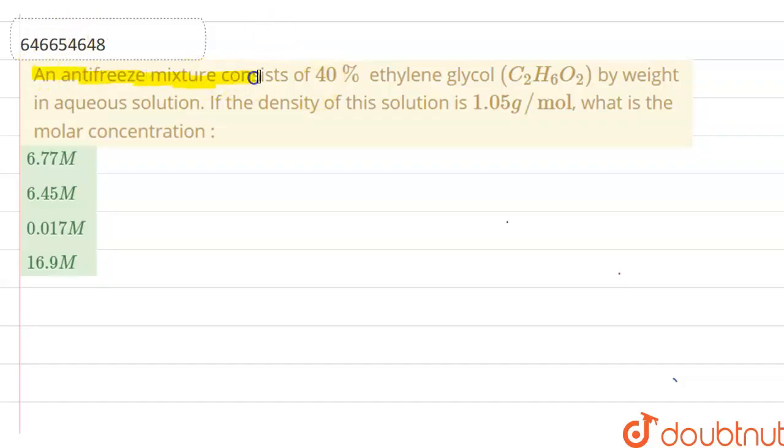An antifreeze mixture consists of 40 percentage ethylene glycol C₂H₆O₂ by weight in aqueous solution. If the density of this solution is 1.05 g/mL, what is the molar concentration?